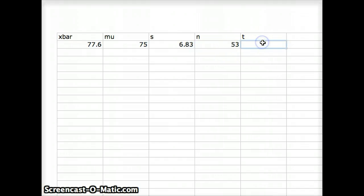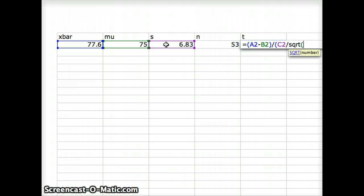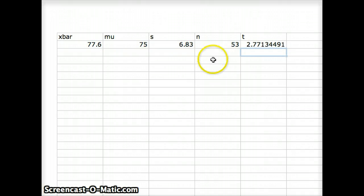t is what we are going to solve for. So t equals (x̄ minus μ) divided by (s divided by the square root of n). We do all that, and we get a t of 2.771.